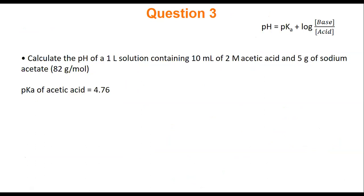We're going to work on using the Henderson-Hasselbalch equation. I'll do question three, and then you'll do question four, and then we'll move on to DNA. I have a one-liter solution containing 10 milliliters of 2 molar acetic acid and 5 grams of sodium acetate. What is the pH given the pKa of acetic acid is 4.76? Any time we see a bracket, that means molarity — moles divided by liters. So I need to know the concentration of the acid I'm adding.